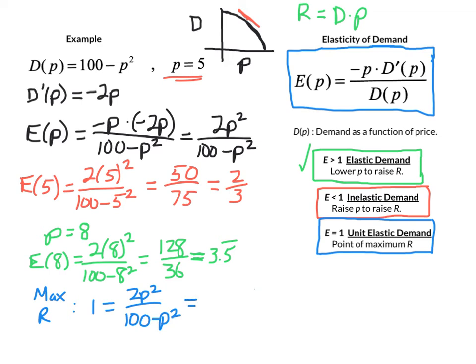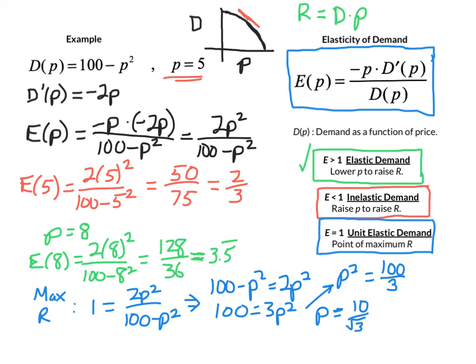So we cross multiply there. We end up with 100 minus p squared equals 2p squared. 3p squared is equal to 100. So p squared is 100 over 3. So my market price to maximize revenue here using the elasticity function would be the square root of that. So 10 over the square root of 3. And at that point, we would like to have a decimal value for that. So that's about $5.77.